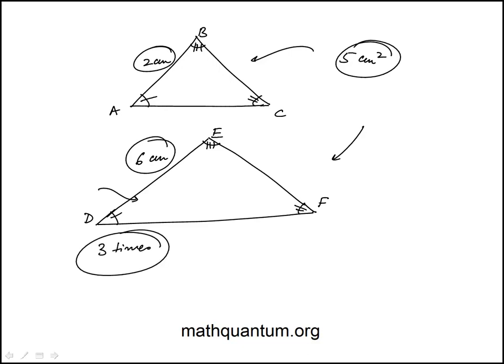So let's call the base here b and the height h. The area would be base times height over 2, equal to 5 square centimeters. Now the corresponding base here would be 3b because we notice the sides are 3 times AB.